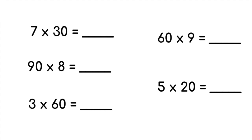For the first one we have 7 times 30. We will be looking at 7 times 3 as our basic fact. 7 times 3 gives you 21. And then all you have to do is add the zero. Since there is one zero in this problem, we'll add one zero on. So 7 times 30 would be 210.